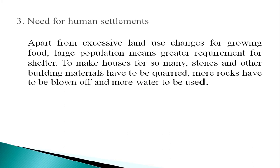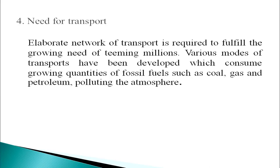Apart from excessive land use changes for growing food, a large population means greater requirements for shelter. To make houses for so many, stones and other building materials have to be quarried, more rocks have to be blasted and more water used. An elaborate network of transport is also required to fulfill the growing needs of billions of people. Various modes of transport have been developed which consume growing quantities of fossil fuels such as coal, gas and petroleum, thereby polluting the atmosphere.